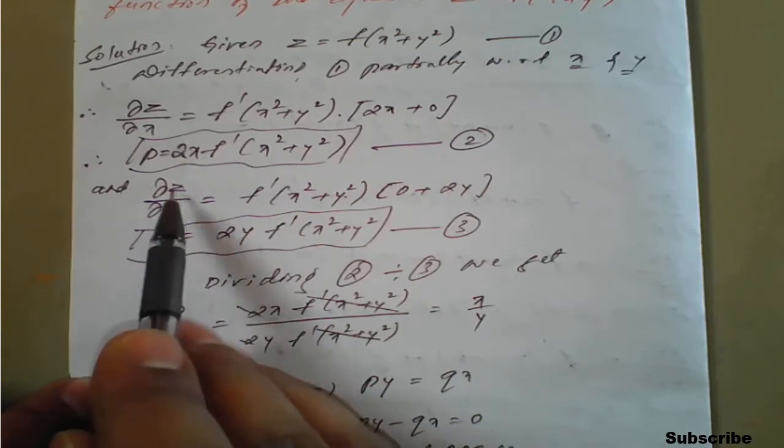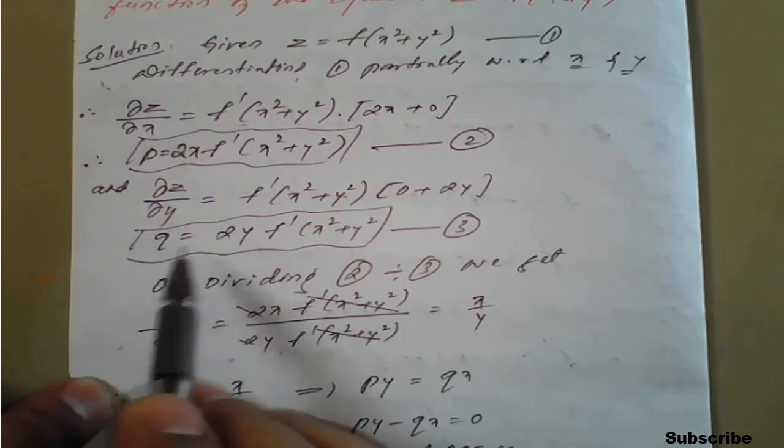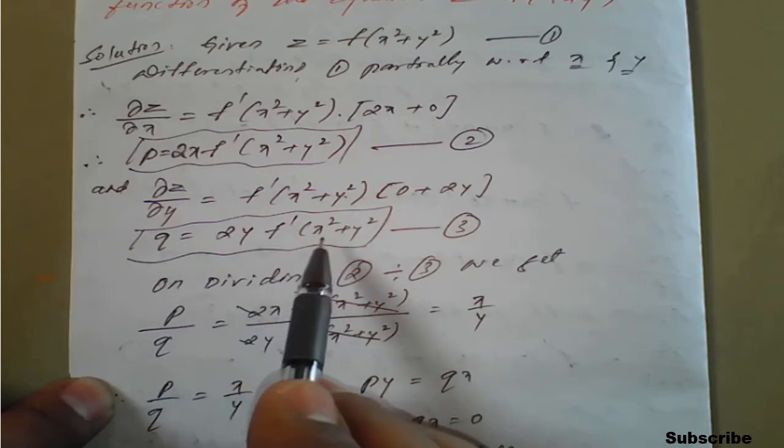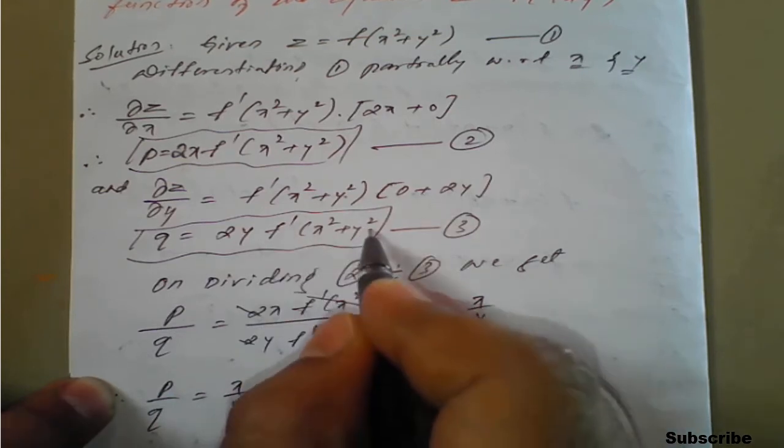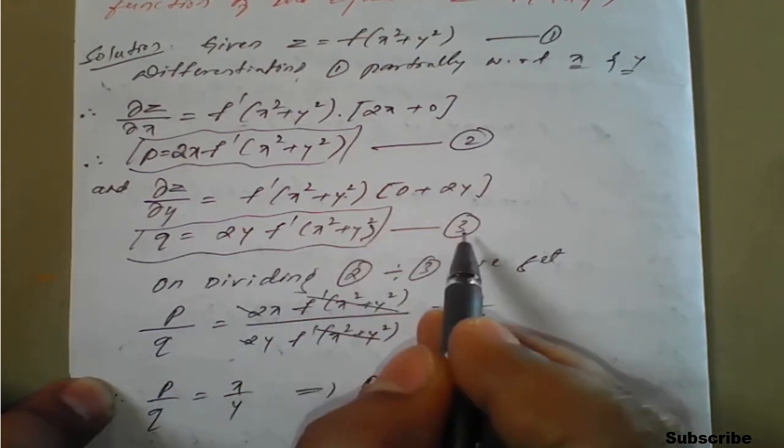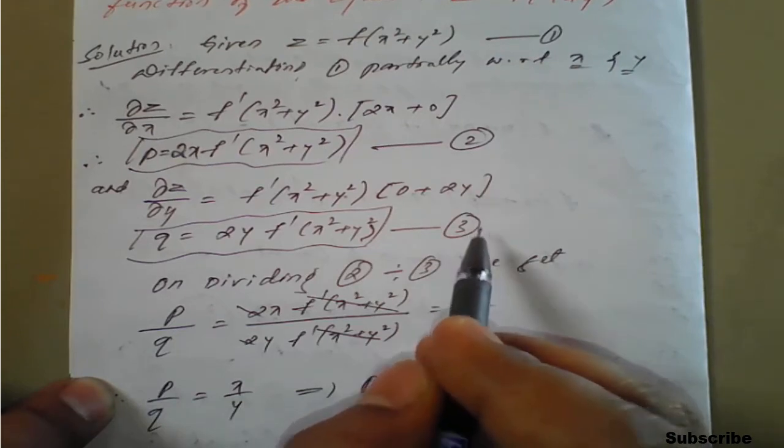On rearrangement we will get, this is nothing but symbol of q equals 2y before this and f dash of x square plus y square. Once we get this, give equation number 3.